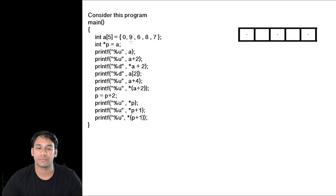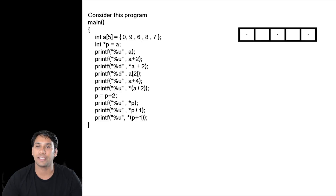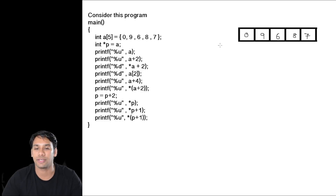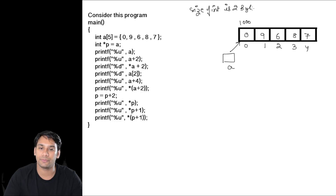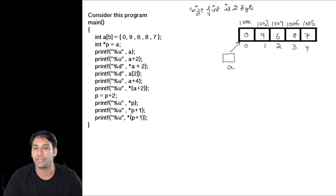In this program, I have taken an array of size 5, storing 5 different integer numbers. The values stored are 0, 9, 6, 8, and 7 at index locations 0 through 4. If the base address of this array is 1000 and the integer size is 2 bytes, then the addresses are 1000, 1002, 1004, 1006, and 1008.